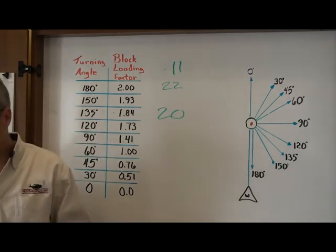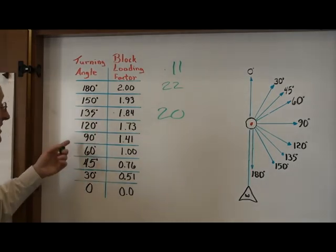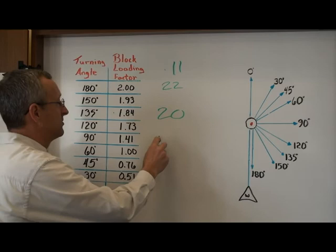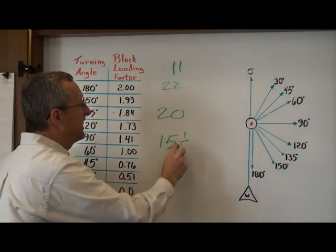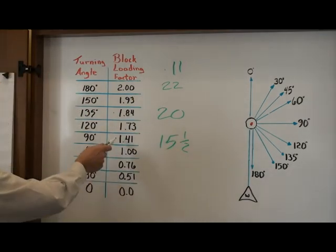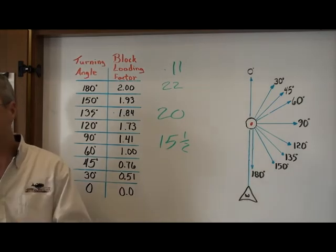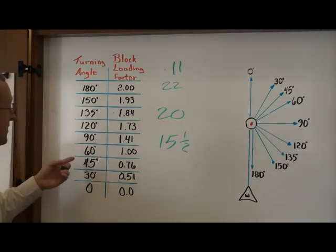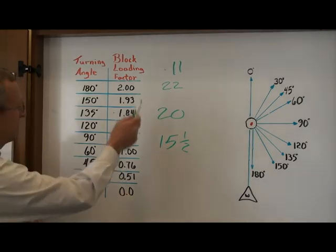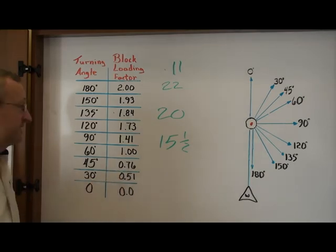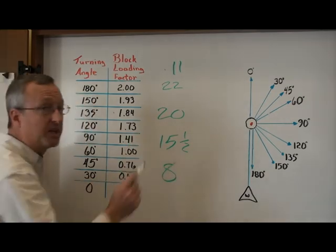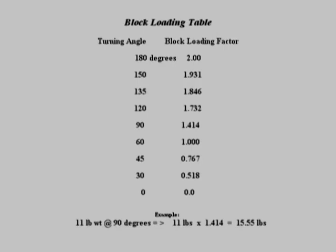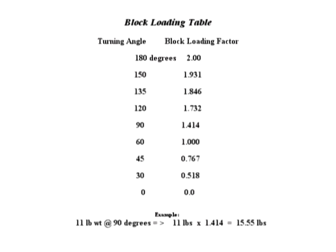The same goes as you go down. When you get to 90 degrees, you're in the range of approximately 15 and a half pounds by taking your 11 times your 1.41. And when we got to 45 degrees, you take your 11 pounds times 0.76 and end up with approximately 8 pounds. And at zero, there's no additional factor. There's no load on the block. The rope is pulling it straight up and it just happens to pass through the block.